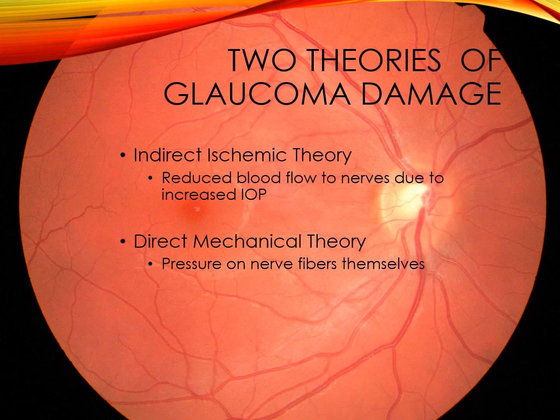There are two theories of why glaucoma damage occurs. One theory is the indirect ischemic theory, which states that the increase in IOP causes reduced blood flow to the nerves. The second theory is the direct mechanical theory, which states that pressure on the nerve fibers themselves causes the glaucoma damage. Treatment is initiated in eyes that have developed glaucomatous optic nerve damage and/or visual field loss, or in eyes that have significant risk. IOP is then lowered to a target level determined by many factors, including baseline IOP, how extensive the damage is to the optic nerve, other risk factors including life expectancy, medical history, and family history.